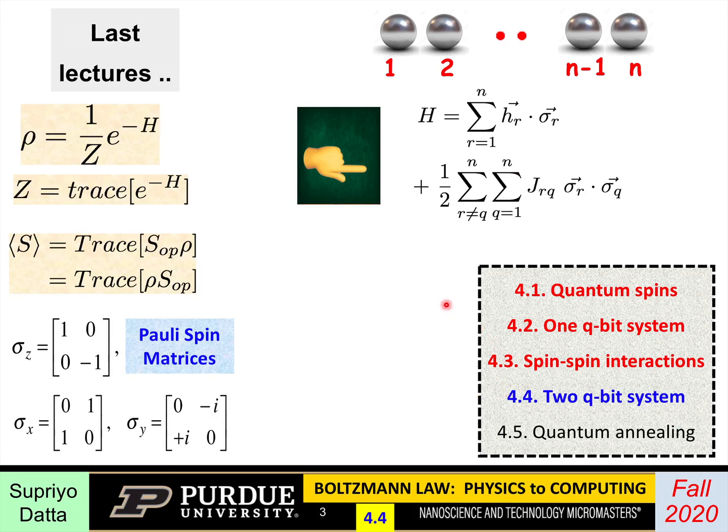In the last lecture, we established this basic framework for the quantum description. How a quantum spin is represented by these operators, these Pauli spin matrices, two-by-two matrices, and in terms of that, you can write the energy operator or the Hamiltonian matrix from which you get the probability matrix or the density matrix, and then you can calculate the expected value of any observable if you know the corresponding operator.